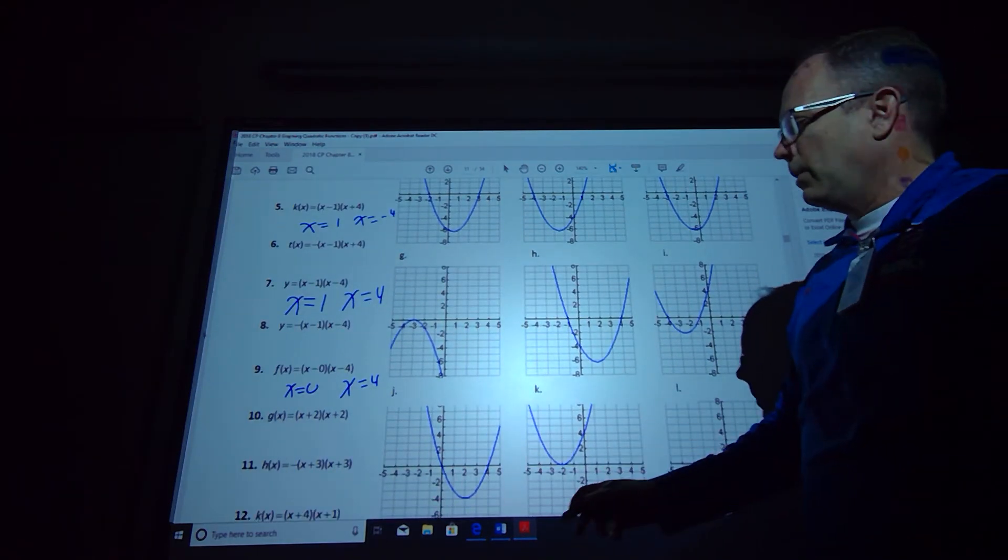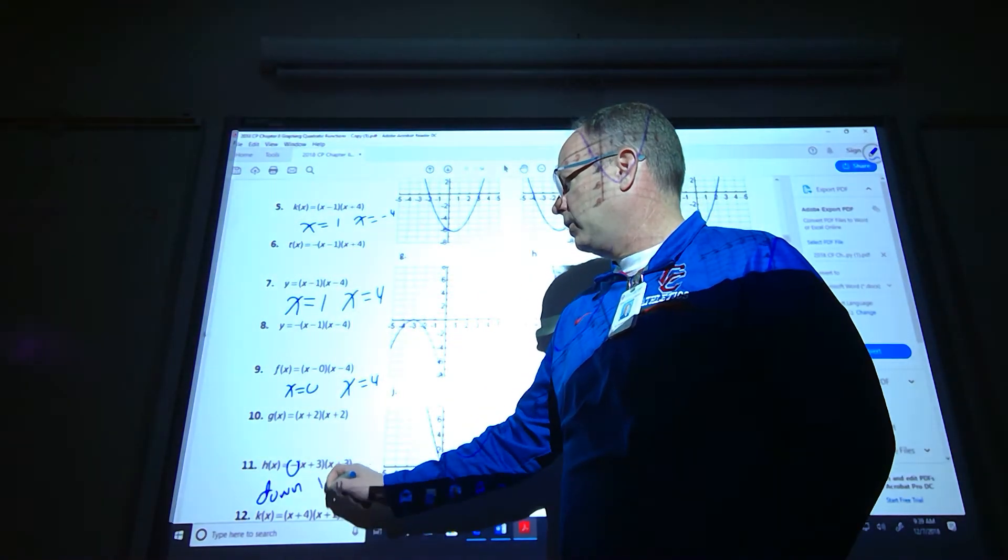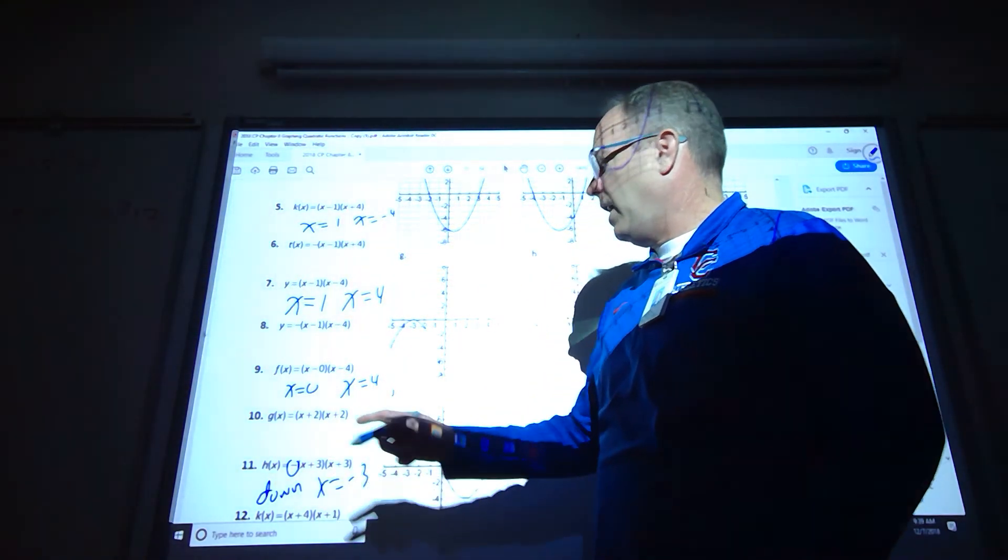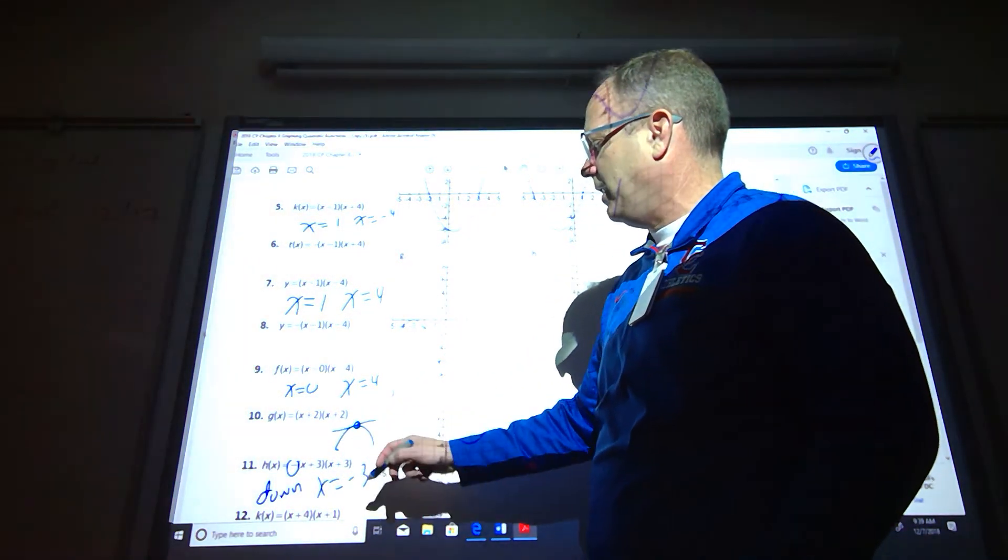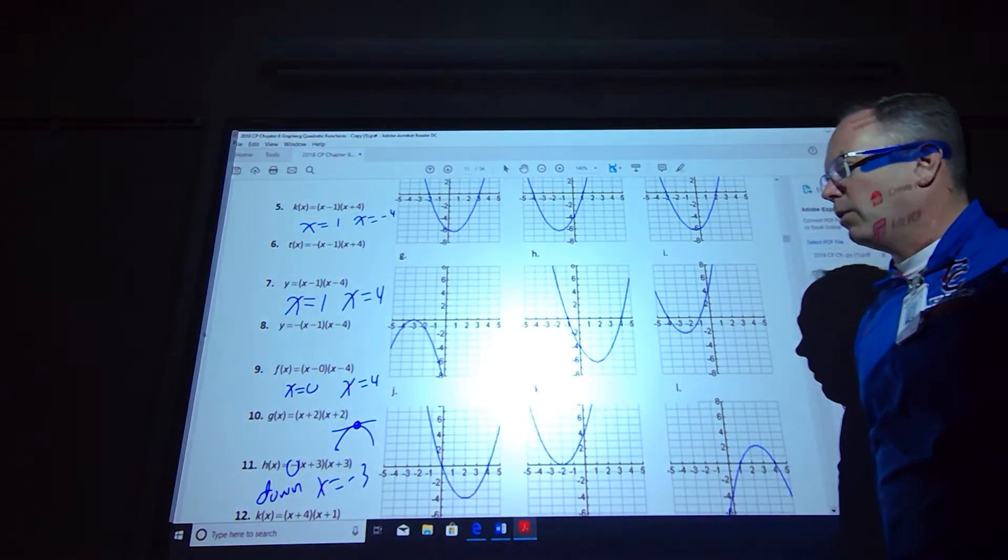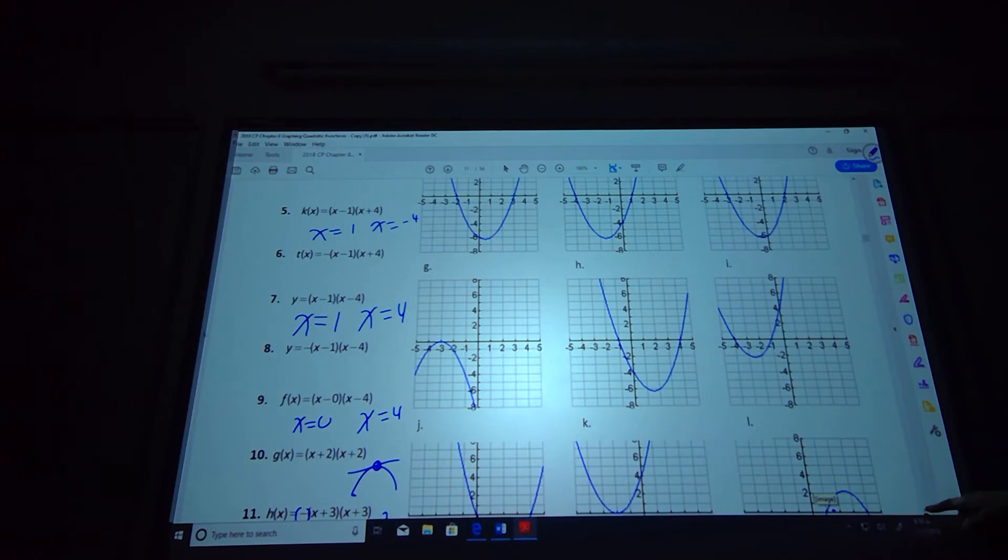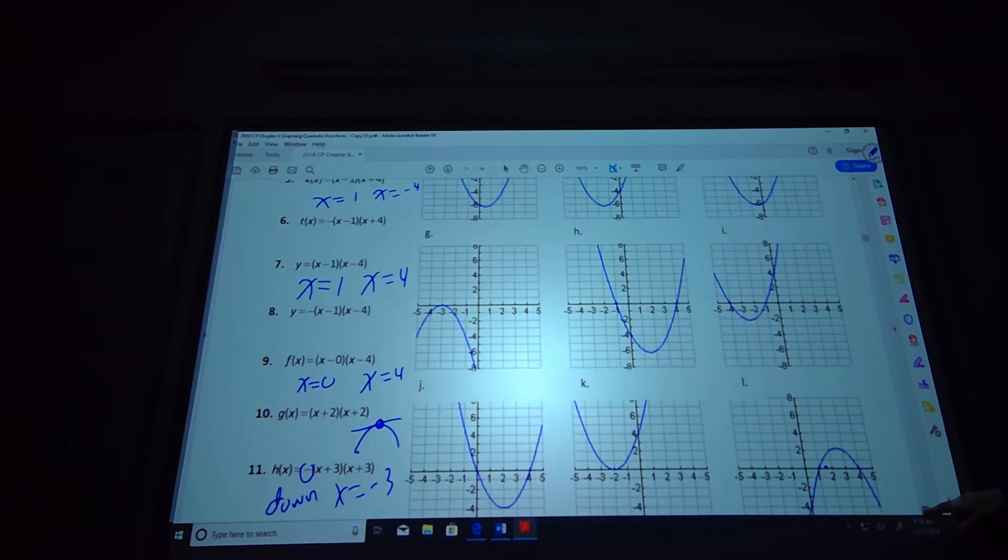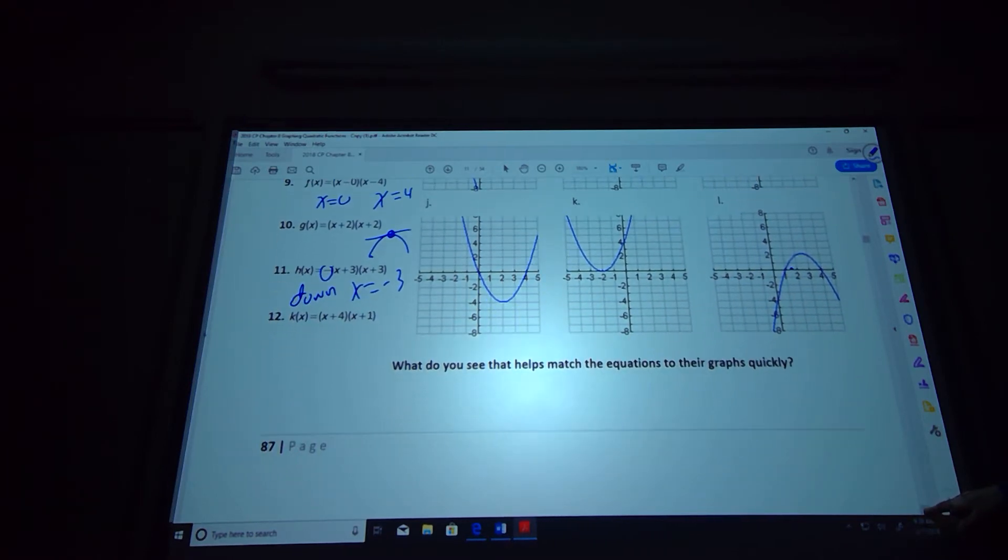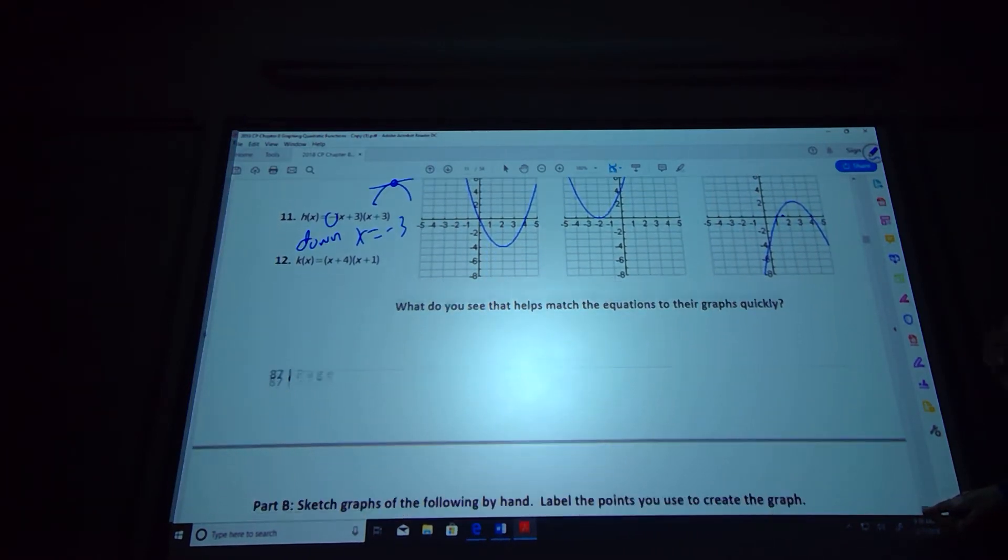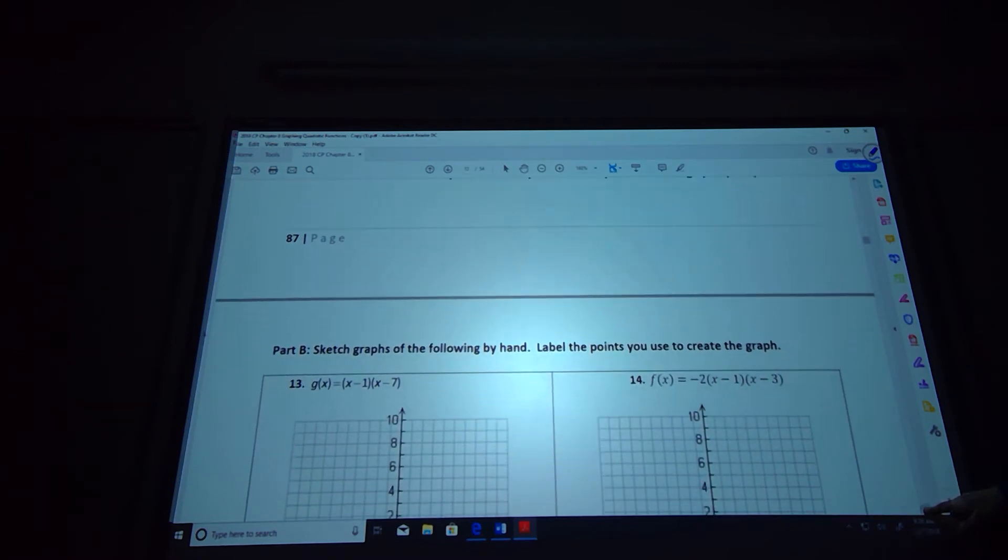Number 11 opens upside down because you have a negative out front. But then I have x equals negative 3 and it happens there twice, so that means this one bounces off the x-axis at negative 3. So look for the one that's going down, bounces off the x-axis at negative 3 for number 11. Number 13 looks like maybe it's down a little bit further. And then we want to start sketching these by hand and label the points.